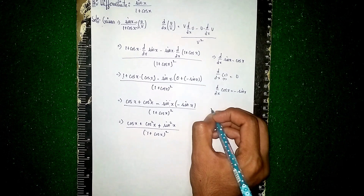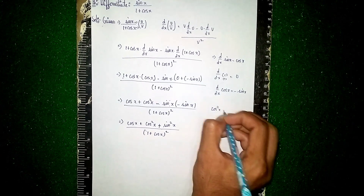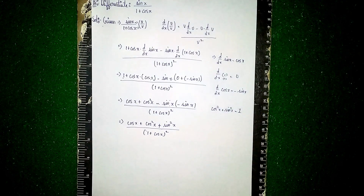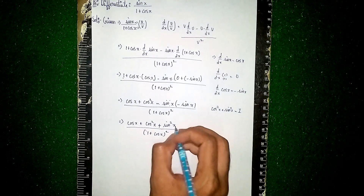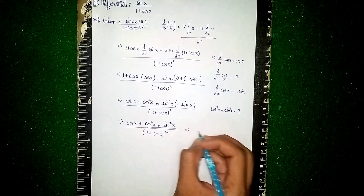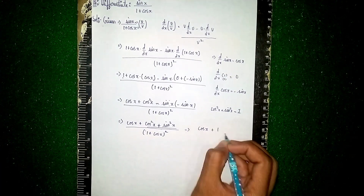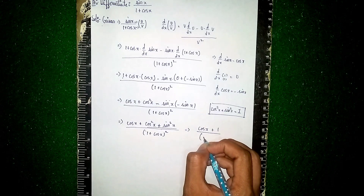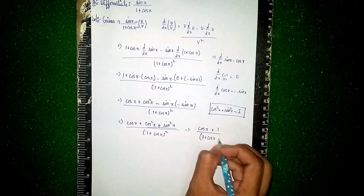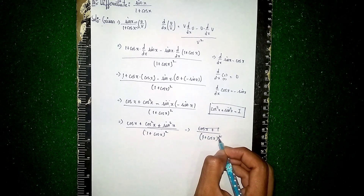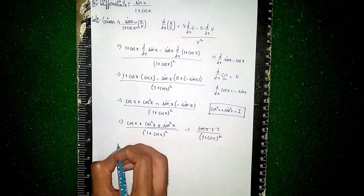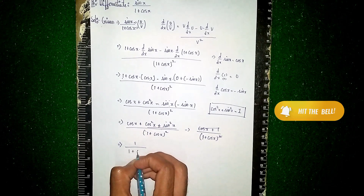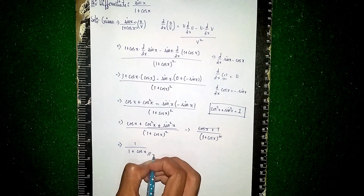We use the basic trigonometric identity cos²(x) + sin²(x) = 1, which we know from class 9 or 10. Substituting, the numerator becomes cos(x) + 1. So we have (1 + cos(x)) divided by (1 + cos(x))². The (1 + cos(x)) in the numerator and one factor in the denominator cancel, leaving 1 / (1 + cos(x)). This is our final answer.